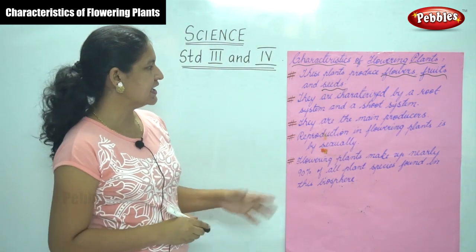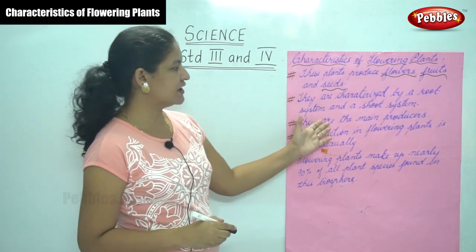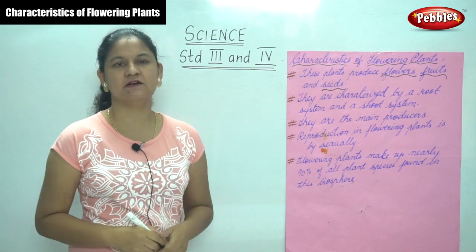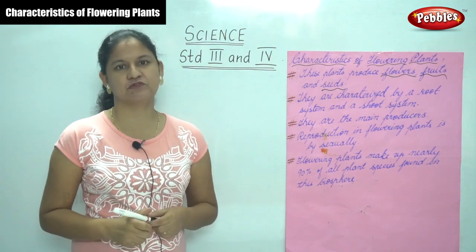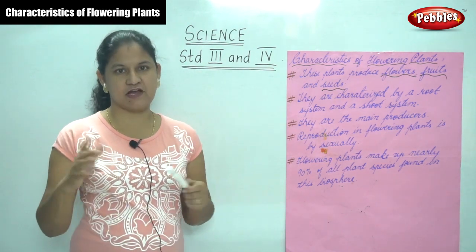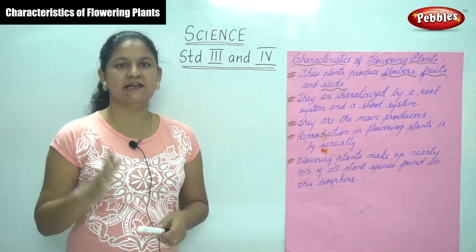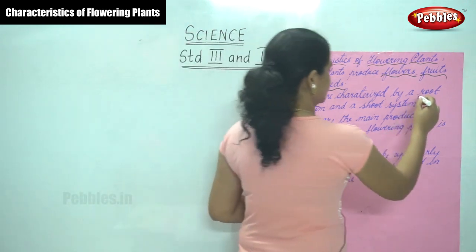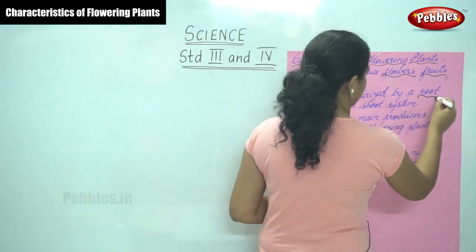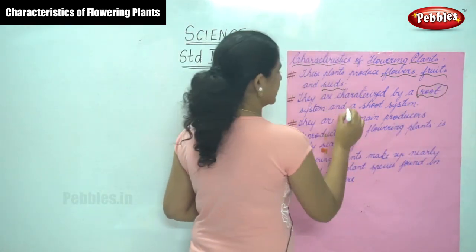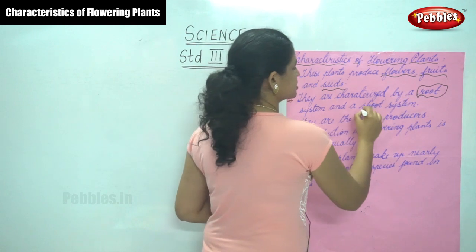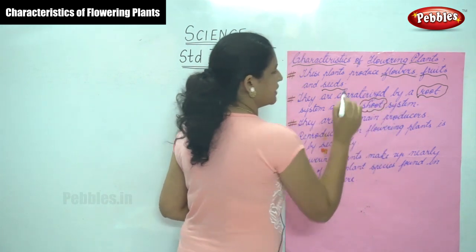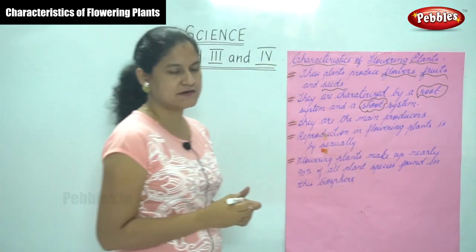The next characteristic is they are characterized by a root system and a shoot system. The root system grows below the ground and the shoot system grows above the ground.